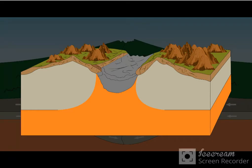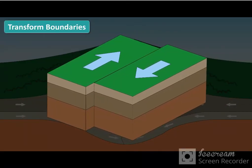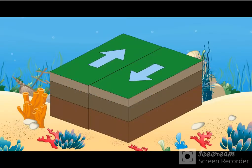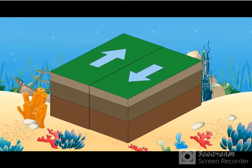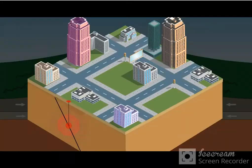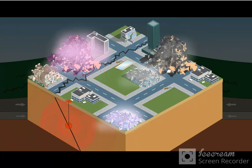Transform boundaries occur where plates slide past each other. While more common on the ocean floor, transform boundaries can also occur on land. Some of the most destructive earthquakes occur along transform boundaries.